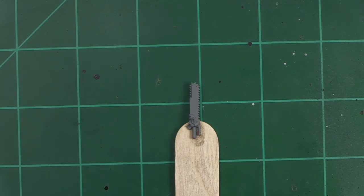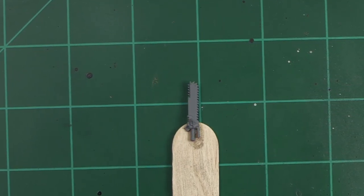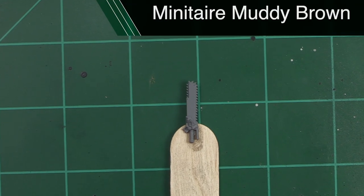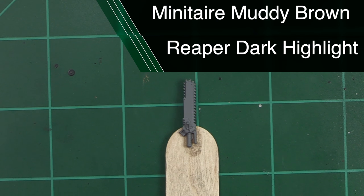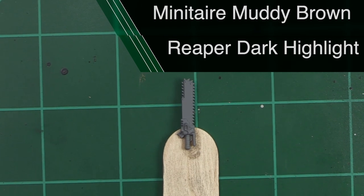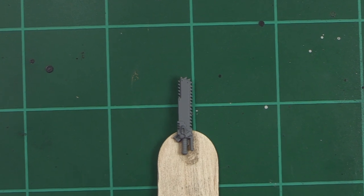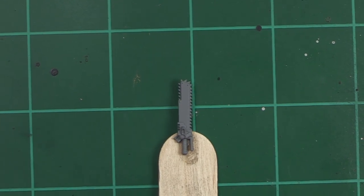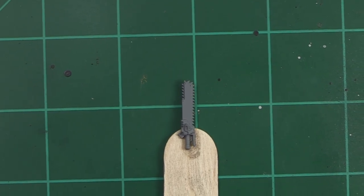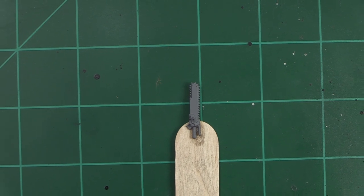To prepare this miniature for the yellow colors we're laying down later, we're going to start by spraying down some brown. I generally like to use Minitare Muddy Brown paint, but today we're using Reaper Dark Highlight because I was out of Muddy Brown. It's important to note that we're laying down brown first because yellow has much better coverage over brown and it looks really nice.